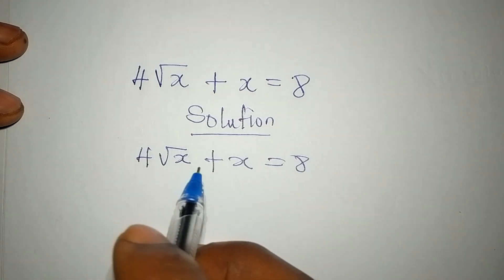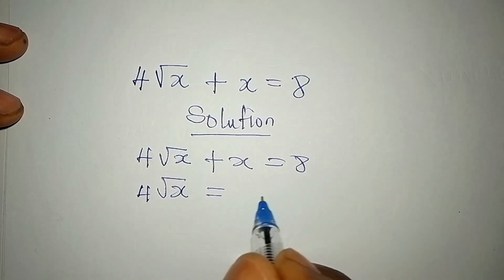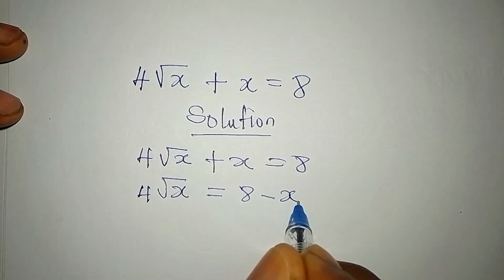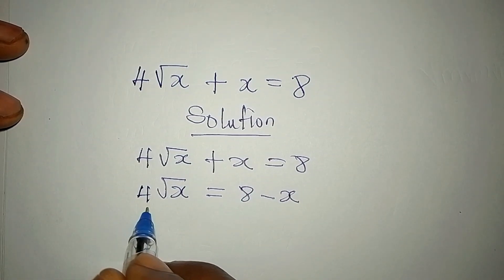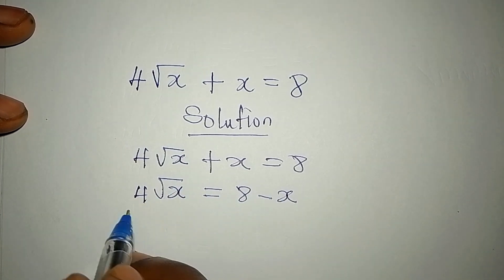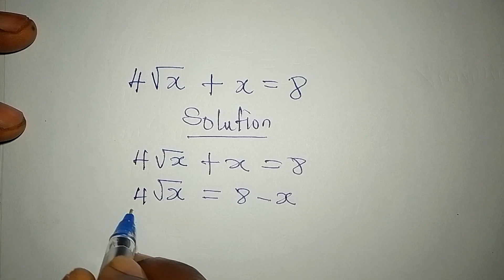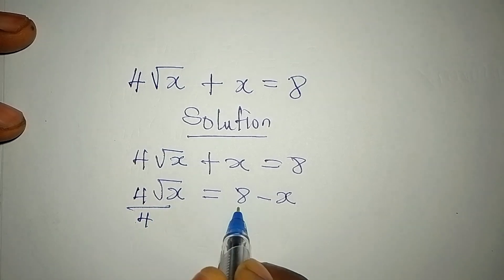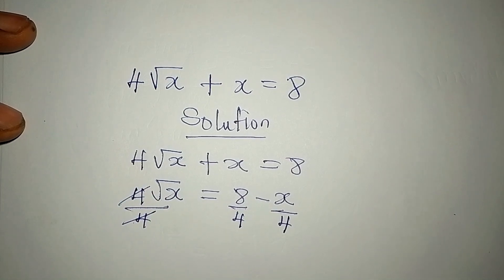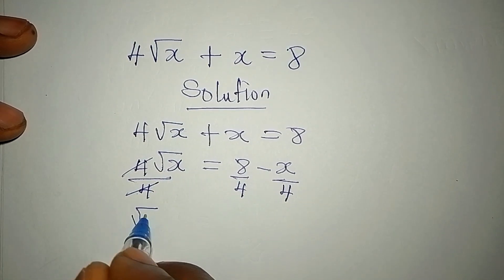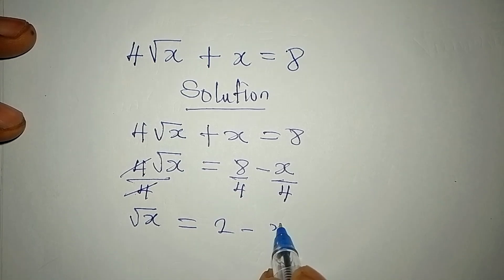From here I want to make 4√x the subject. That means we'll have 8 - x on the other side. And then we can decide to divide by 4, so that we'll be having this divided by 4, this by 4, this by 4. So that √x will be equal to 2 - x/4.